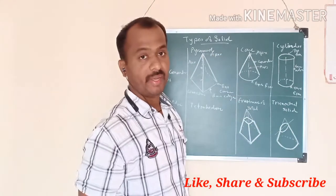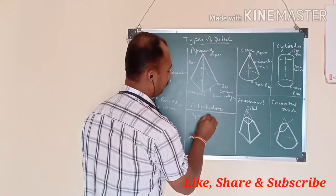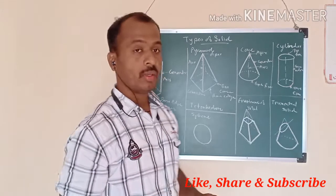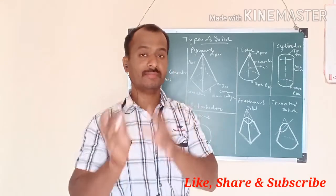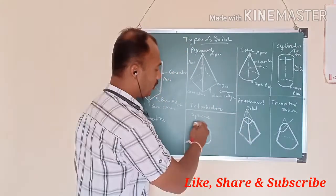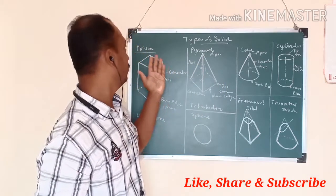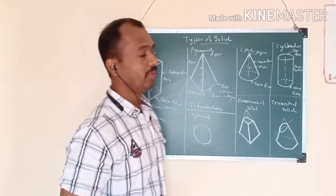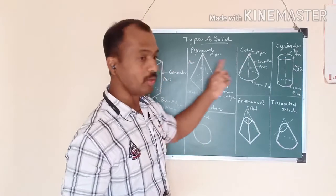One more solid is the sphere. The sphere is a circular or round object — just like a tennis ball, football, or any round ball. The sphere has only a diameter and no other special terms. So these are the various types of solids: prism, pyramid, cone, cylinder, frustum, truncated solid, and sphere — which we will cover in the next lectures.